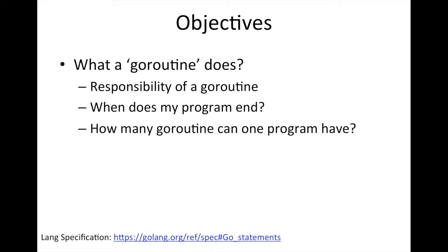We're going to talk about when does your program end. We kind of know already - a program ends when the main function ends, because that's where your program starts. Also, how many GoRoutines can you have in one program? A whole lot. Unlike threads, where creating too many more than your CPU cores gives diminishing returns due to management overhead, with GoRoutines you can have hundreds even on a single-core machine, because of how GoRoutines are created versus how threads are created.